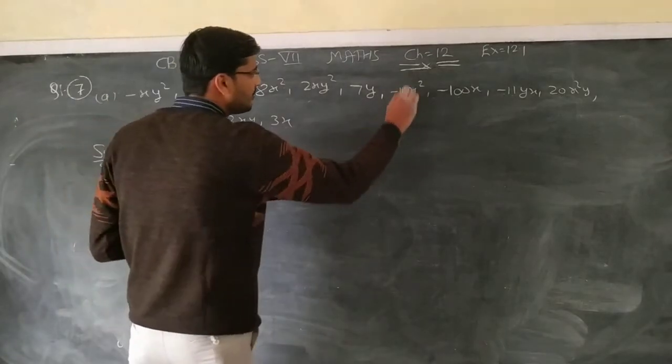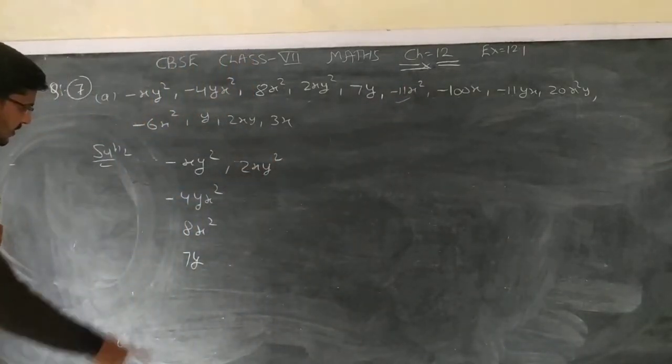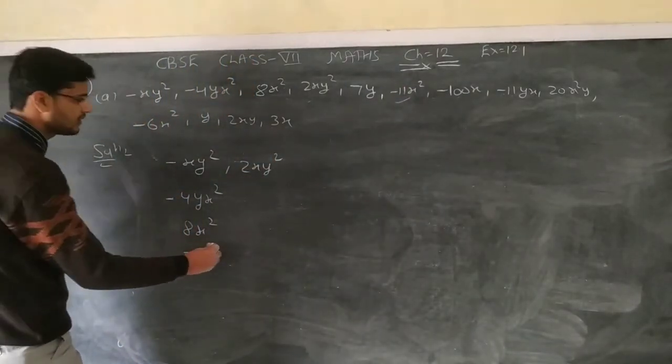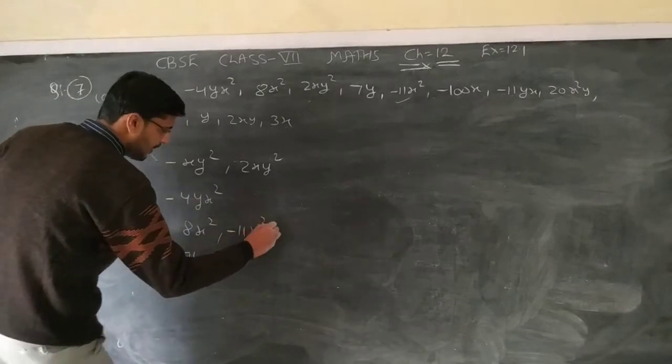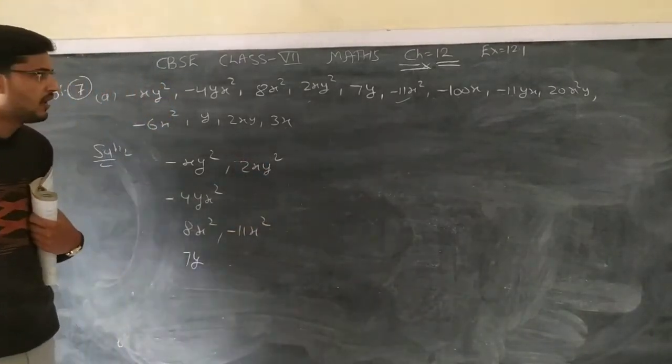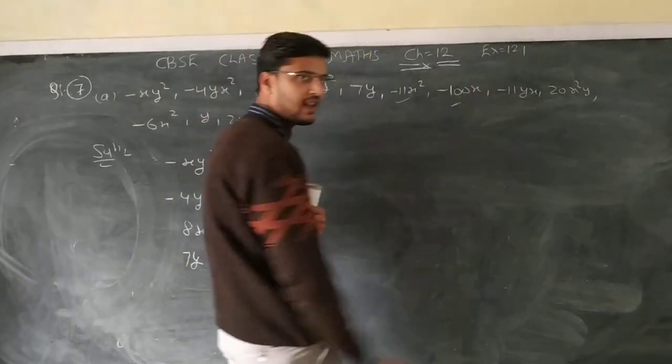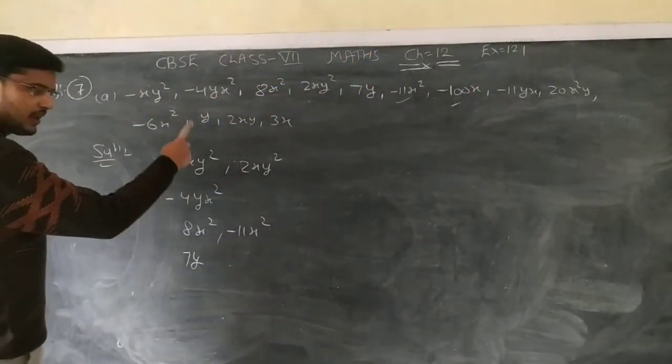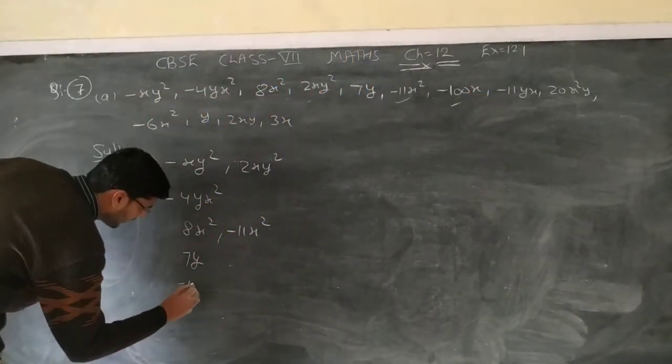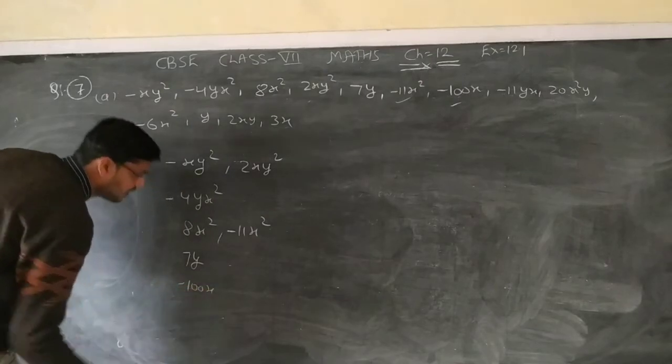Now another one is minus 11x square, x square. Now next one is minus 100x, so x is going to turn negative, 100x negative.